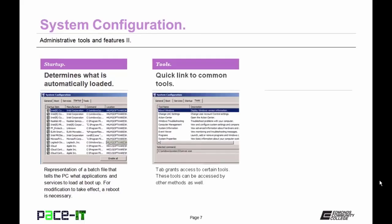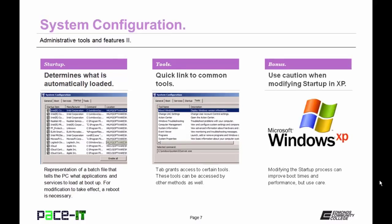The General tab is a representation of a batch file that instructs the PC on what to do and load upon a boot request. The Boot tab lets the administrator tell the PC where to boot from on the next power up and how the boot will occur — safe boot and so on — particularly useful on a dual boot system. The Services tab shows what services are available with their current status. The Startup tab lets the administrator control what loads automatically upon boot; modifying anything here requires a reboot. Use caution when modifying the Startup tab in Windows XP, as causing certain files not to load upon boot may prevent the system from booting.